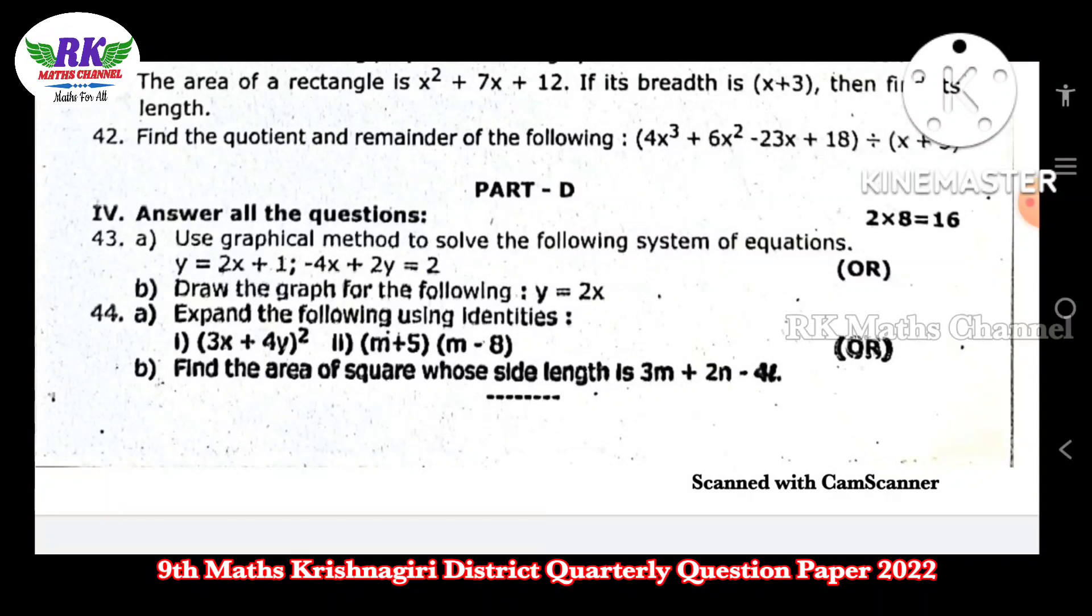Question number 43: Use graph method to solve the following system of equations. Draw a graph for the following. Y = 2X plus 1, minus 4X plus 2Y = 2. Simple and easy.